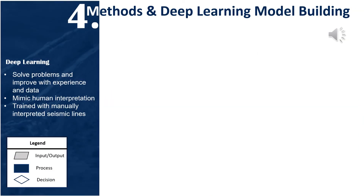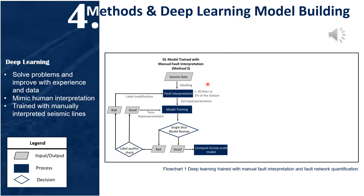What is deep learning? Deep learning is a method that allows computers to solve problems with experience and data. To train the deep learning system in this study, I manually interpreted faults on several seismic inlines and crosslines and fed it to the system — this is method 3. With this knowledge, the deep learning produces fault predictions mimicking human interpretation. Then I review the result. If it's good, the prediction is applied to every inline and crossline. If not good enough, I reevaluate my fault input — for example, whether the fault sits in the right place — and train the data again.